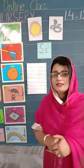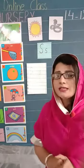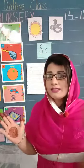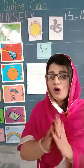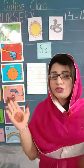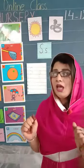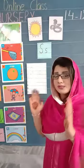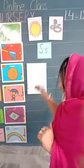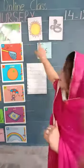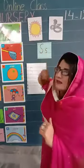Aap log rozana dekhte hain na — sky pe jo yellow color ka hota hai, jis se hamein bahut saari roshni milti hai, light milti hai — us se hum bolte hain sun. S says S. Sun.